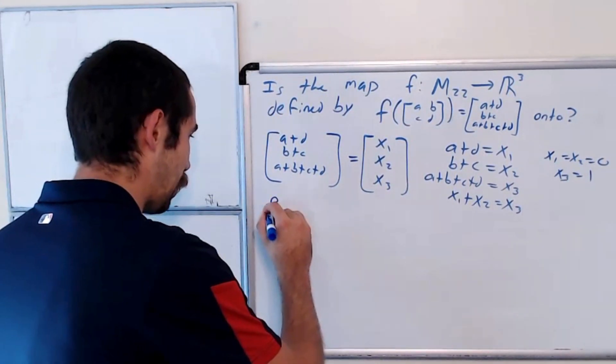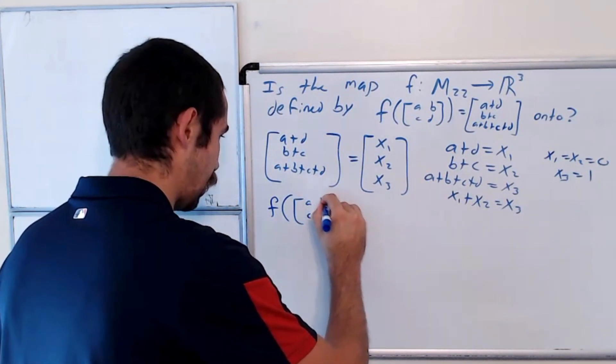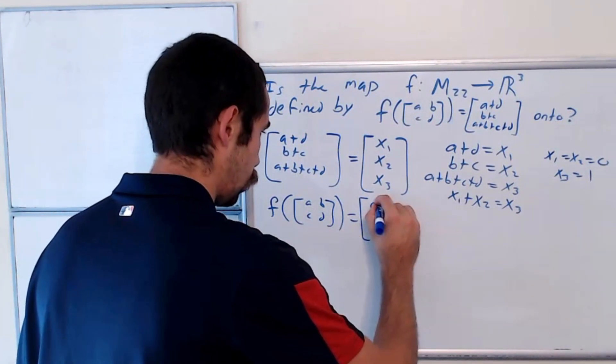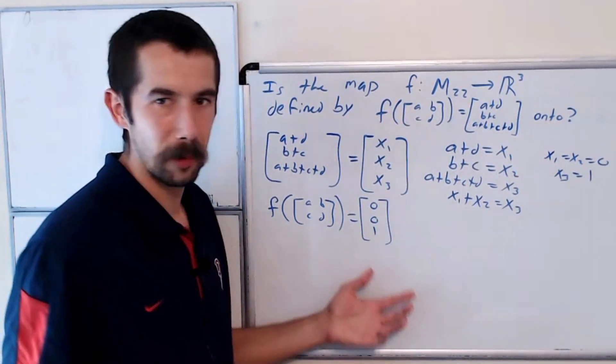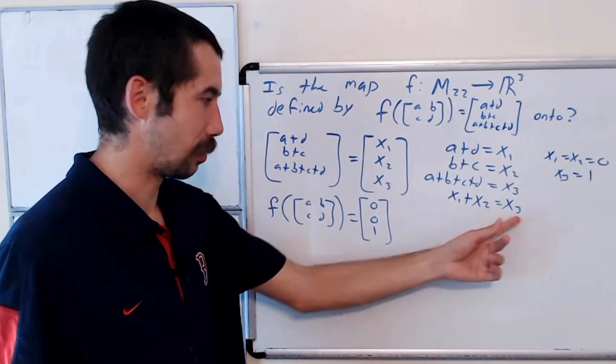So we want to find ABCD such that f of ABCD is equal to 001. Why did I pick 001? It just happens to be three numbers that do not satisfy X1 plus X2 is equal to X3.